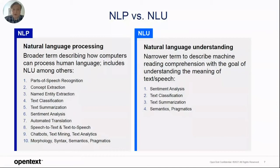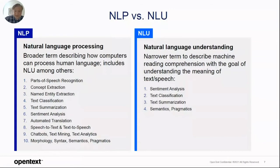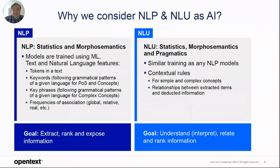NLU is a narrower term to describe how a machine can understand textual content or the content of a conversation. Here we're talking more about sentiment analysis, text classification, and text summarization. The science behind the scene is more semantics and more pragmatics. The goals are also different: whenever we talk about NLP, the goal is to extract, rank, and expose information; whenever we talk NLU, the goal is rather to understand, relate, and rank information.